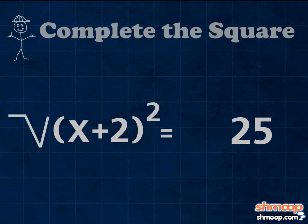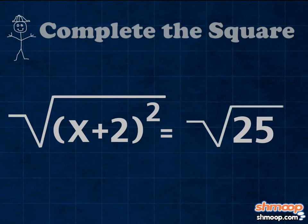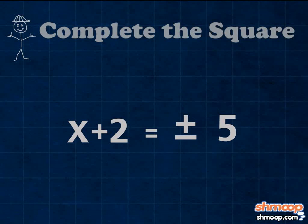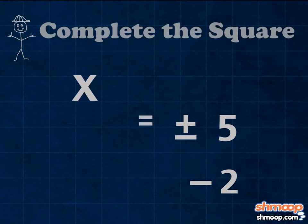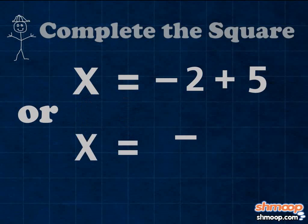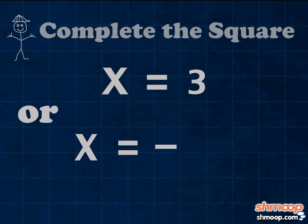All that's left is to take the square root of both sides. Don't forget that the square root can be positive or negative. We're left with x plus 2 equals plus or minus the square root of 25, or just 5. Subtract 2 from both sides, and we get two answers. So x equals either negative 2 plus 5, or negative 2 minus 5, which gives us 3 and negative 7.